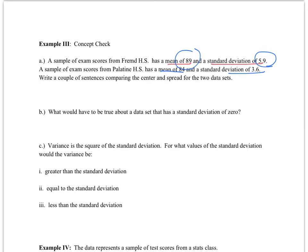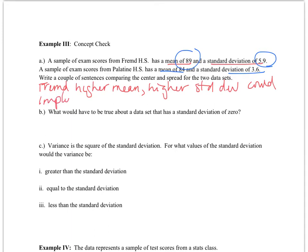There are a lot of conclusions we can draw here. Yes, Fremd has a higher mean. However, that higher standard deviation could imply that we have some high scores skewing the data — a couple of high scores could be raising that average. Based on the higher spread, the scores are not tightly clustered around 89. In Palatine, we have a smaller average, but our standard deviation is smaller, which means the scores are clustered much more closely together.